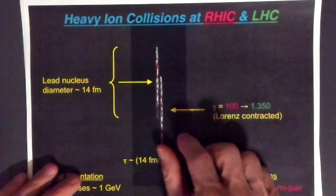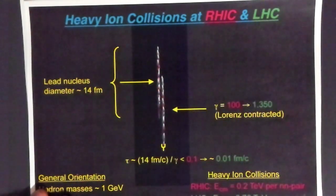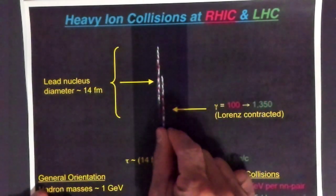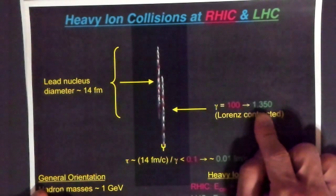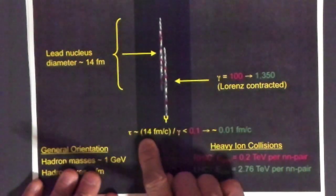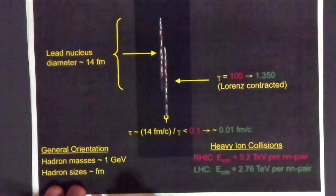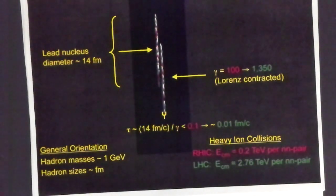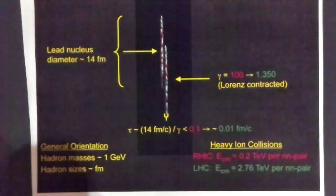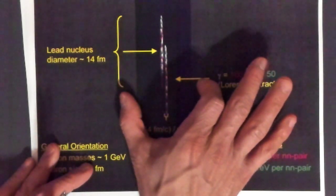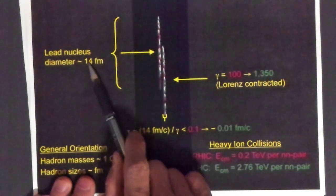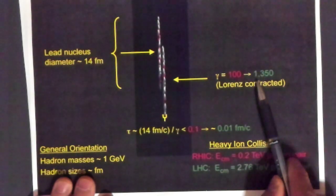You get a gamma factor of about 100 for RHIC. So a nucleus that would normally be spherical is pancake-shaped, contracted by a factor of 100. At the LHC, it's contracted by a factor of about 1350. The radius of the lead nucleus is about 14 Fermi. The width in the lab frame would be 14 Fermi divided by either 100 (RHIC) or 1350 (LHC), making these nuclei very compact in the laboratory frame.